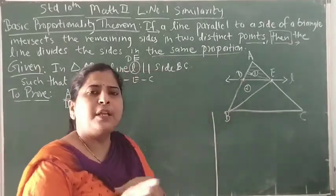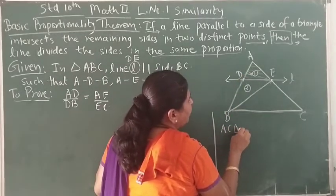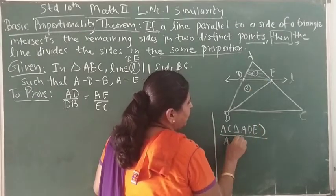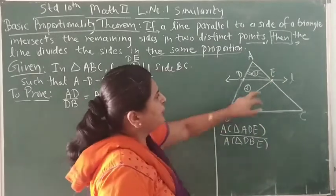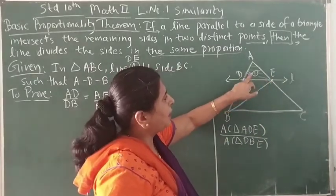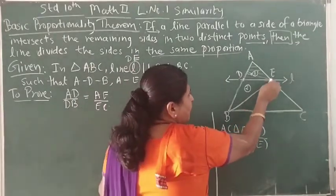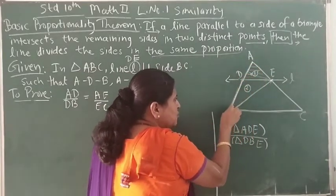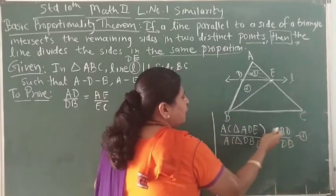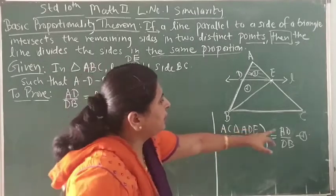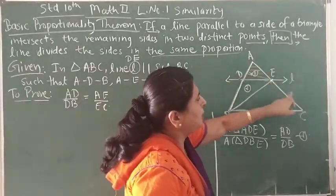Using the property of areas of two triangles from the previous video, suppose we find the ratio: area of triangle ADE upon area of triangle DBE. Since E is the common vertex, the perpendicular from E is the common height for both triangles. When heights are equal, the ratio of areas equals the ratio of their bases. So area(ADE)/area(DBE) = AD/DB. We can call this statement number 1, with the reason being 'triangles with equal height.'